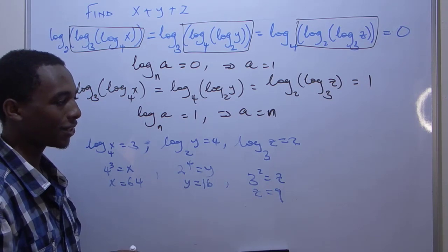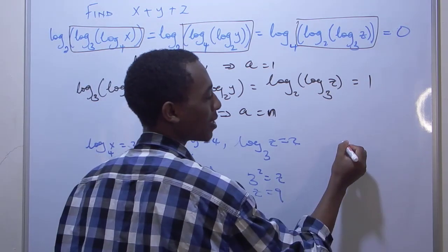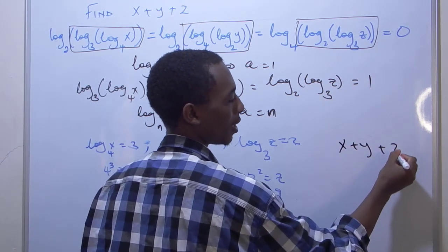So that means z equals to nine. And boom, we have it now. Let's go ahead and calculate the sum x plus y plus z.